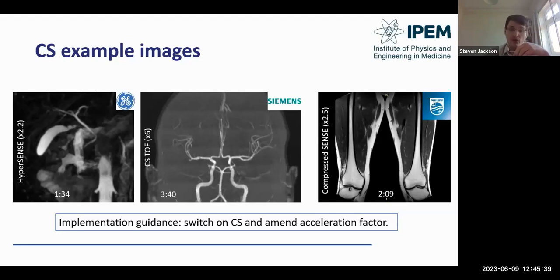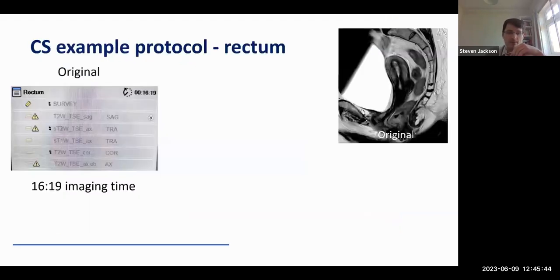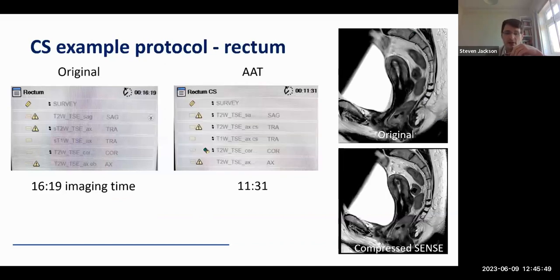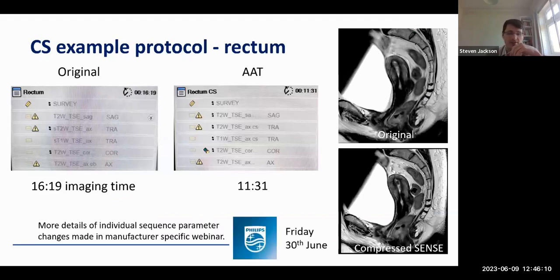An example protocol for rectum on a Philips 3T system: the original protocol was just over 16 minutes. After Compressed Sense was applied, the total sequence length within the protocol came down to 11 and a half minutes, with comparable image quality between the original and the Compressed Sense equivalent. More details of individual parameter changes will be in the Philips webinar on the 30th of June.